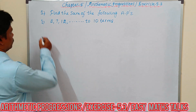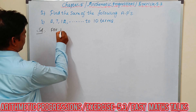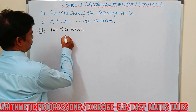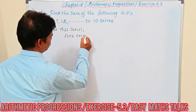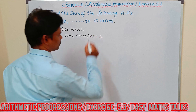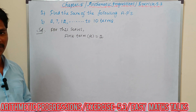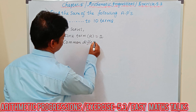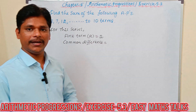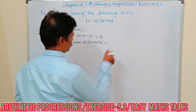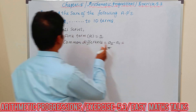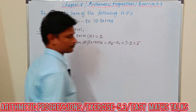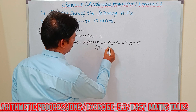For the first question, the first term a is given as 2. Common difference d — how to find out? Second term minus first term: a2 minus a1 = 7 minus 2 = 5. So common difference d is equal to 5.